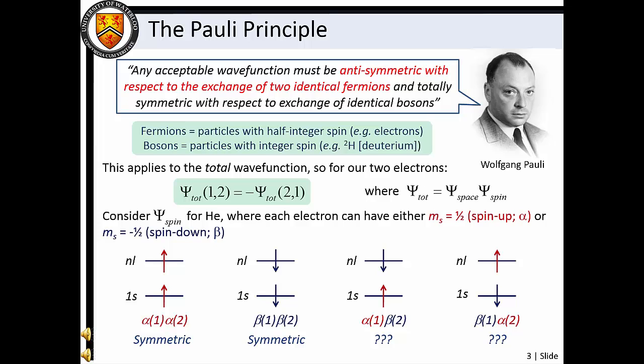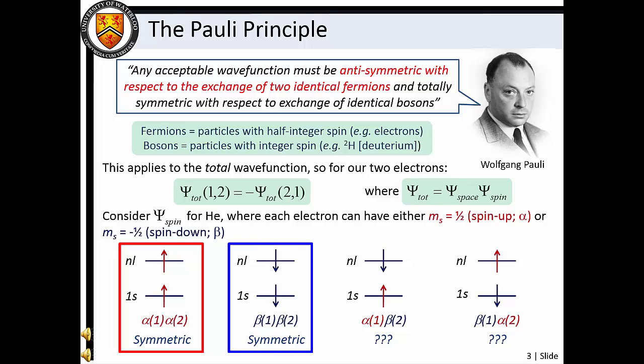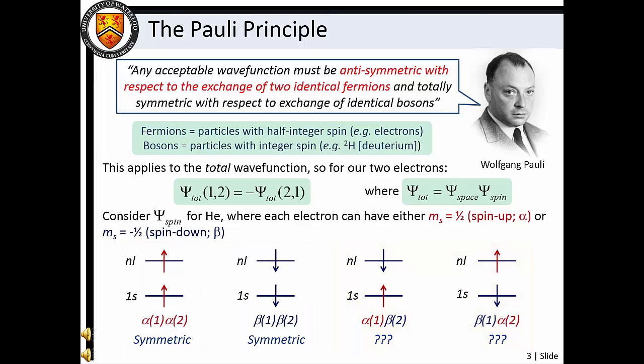Viewing the total wave function as a product of a spatial wave function and a spin wave function allows us to consider the effect of spin exchange. If we label m_s = +1/2 as spin up or alpha spin, and m_s = -1/2 as spin down or beta spin, we can arrange two electrons into four spin orientations: both alpha, both beta, alpha-beta, or beta-alpha. In the first two cases, swapping electron 1 and electron 2 has no effect on the spin configuration. For the final two spin orientations, swapping the electrons yields neither a symmetric nor anti-symmetric function. Instead, we interconvert between case 3 and case 4.